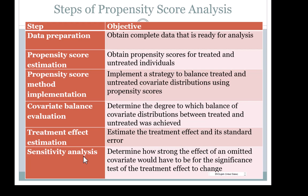Once you implement one of the strategies — weighting, matching, or stratification — the covariate balance evaluation is a quality control step where you verify if you succeeded in balancing the covariate distributions. This is typically done by calculating standardized mean differences for all covariates for treatment and control groups and checking if those differences are small enough. Once you are satisfied with covariate balance, you can move to treatment effect estimation. After that, sensitivity analysis is very important because it gives you an idea of how strong an omitted confounder would have to be for your results to change.